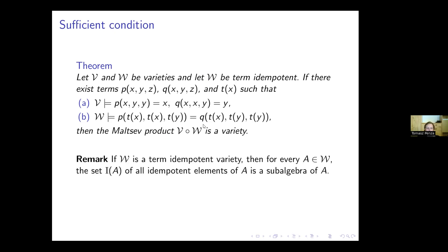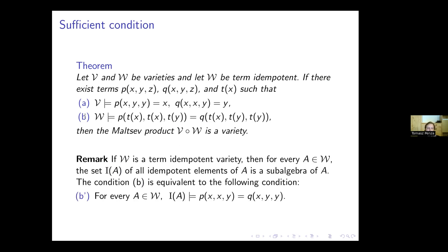A little remark on condition B: if W is a term idempotent variety, then for every algebra in W, the set of all idempotent elements of A, denoted I(A), is a subalgebra of A. So condition B may be rewritten as: for every algebra A in W, the subalgebra of idempotents of A must satisfy a certain identity. The role of term T is just to take us to this subalgebra of idempotent elements.